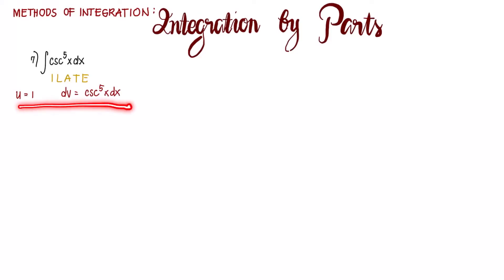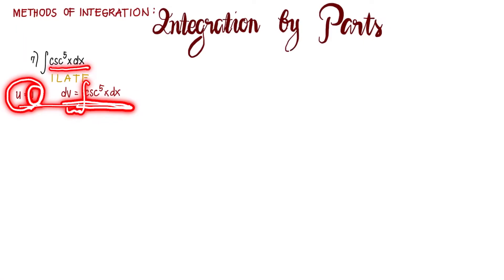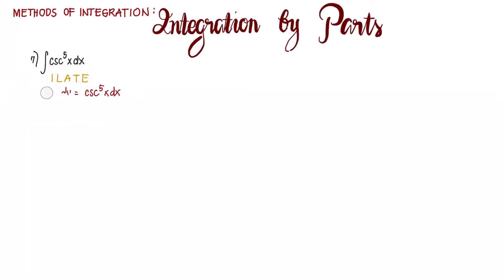But doing so will not change anything with our given, because when we find the differential of u, which equals 1, that gives us 0. If our u is set as a constant, nothing will change because we are still going to integrate dv, which is just our given. So we have to express our given in such a way that we can separate it into portions u and dv. We are going to express our integrand as the product of cosecant cubed x and cosecant squared x dx.